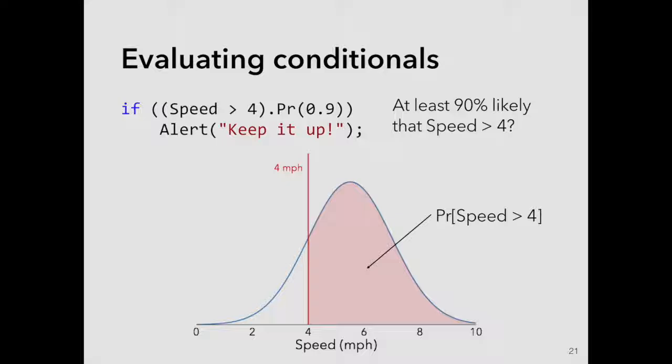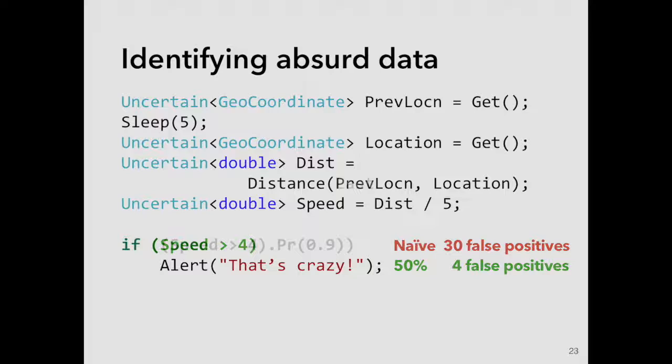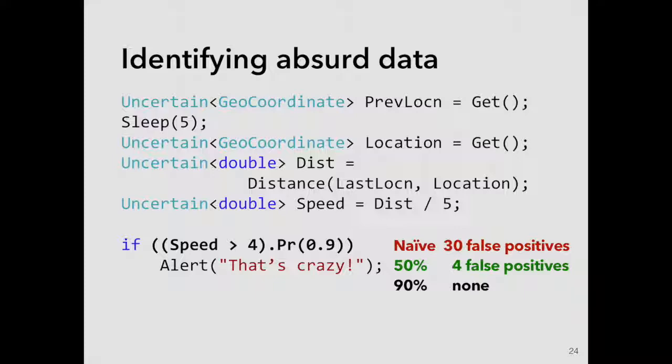So this lets you if we go back to our example, in our naive implementation, we had 30 false positives for a data set of several hundred points. And then just by putting the uncertainty type system in there and having a probability of greater than 50, that brought us down to four false positives. And then if we wanted to be highly confident in the simple example, we can increase the confidence to 90 percent and my animations didn't work perfectly here. And we get no false positives in this simple example.